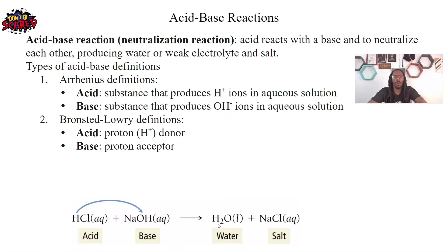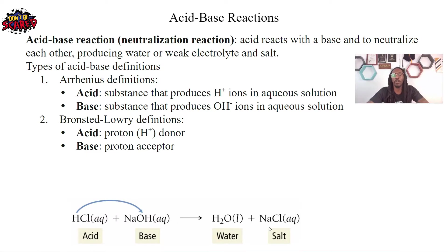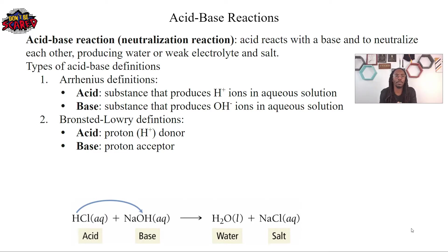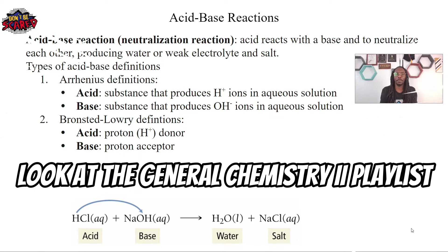When this happens, in this case we've got a strong acid and strong base, so we're going to produce water and salt. Once again, this is an example of mixing a strong acid and strong base. If you want to learn exactly why these are the products, I highly recommend looking at the General Chemistry 2 playlist.